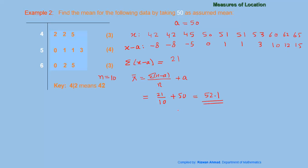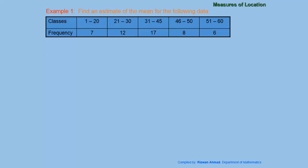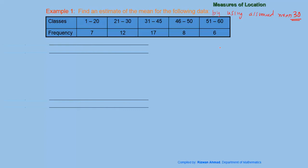Now for finding the mean using the assumed mean method for grouped data. In this example, we have to estimate the mean for the following data using an assumed mean of 30, so A equals 30.